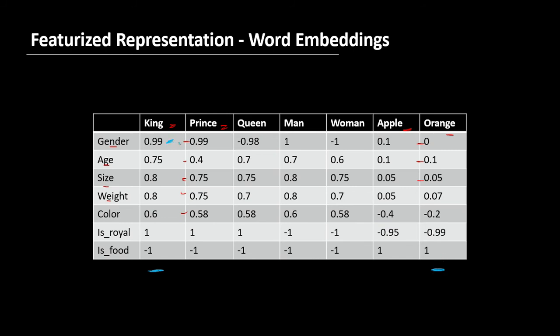For example, here we have a value close to 1 while this is 0. This is 0.75, this is 0.1, this is 0.8, this is almost close to 0. Thus, the values of 'king' and 'orange' are quite different, and the machine can understand that 'king' and 'orange' are not related, while 'apple' and 'orange' are related.